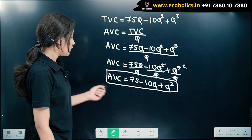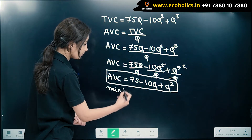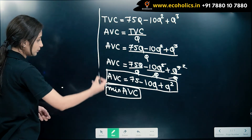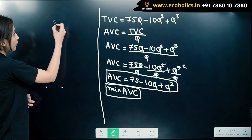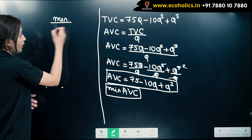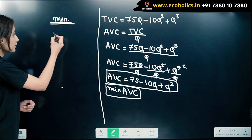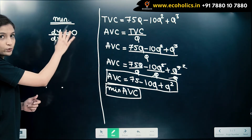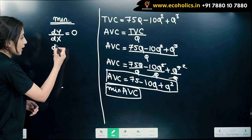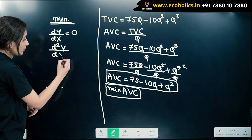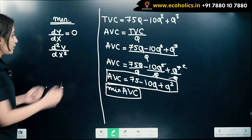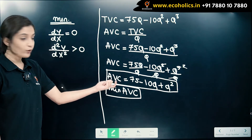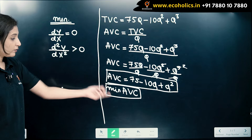We need to find the minimum average variable cost. For minimising, we have two conditions: first, set dy/dx equal to 0; and second, the second order derivative should be greater than 0. So we need to find the derivative of average variable cost, equate it to 0, and then verify the second condition.